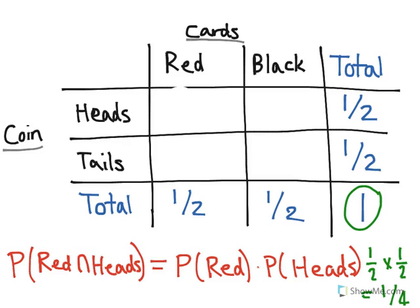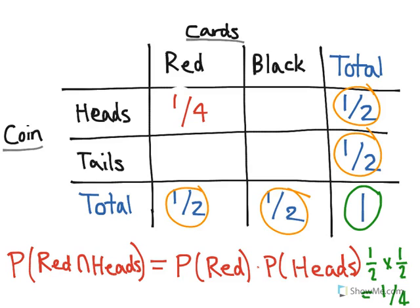That's what goes here—the probability of landing on heads and drawing a red card. We can do the same thing for each of these other three boxes. In this case, because all of our probabilities are 1/2 around these edges, we know that these four boxes will all be 1/4 because we do the same thing as we did here.